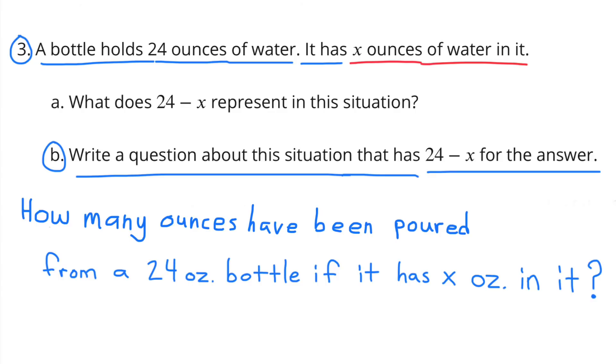B. Write a question about this situation that has 24 minus X for the answer. How many ounces have been poured from a 24 ounce bottle if it has X ounces in it?